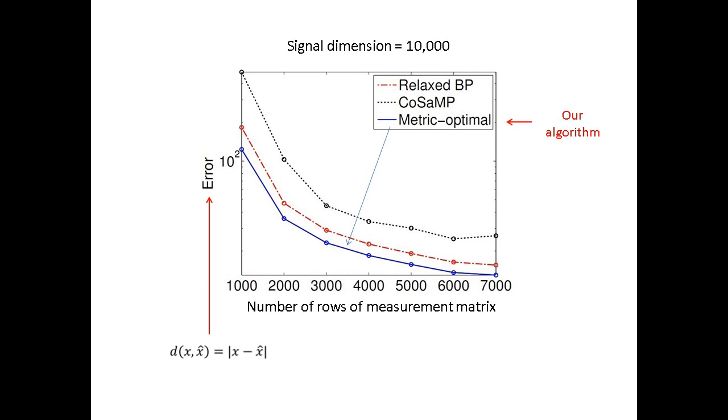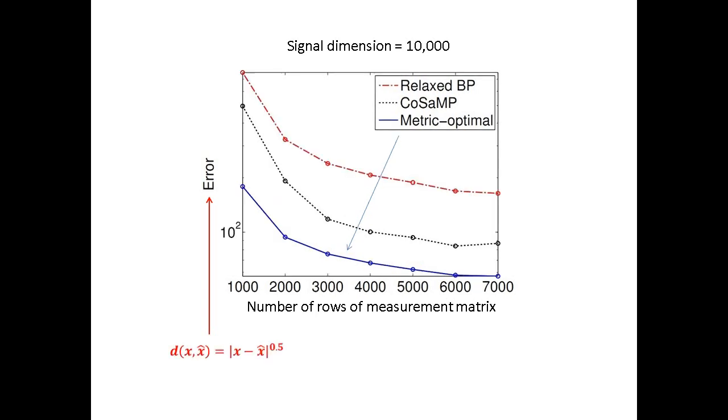Note not only that, but the error achieved by our algorithm is 20% lower than the errors achieved by two other algorithms. Similarly, in the second plot, we define the error metric to be the square root of the absolute error. Again, our algorithm achieves significantly lower errors than those achieved by the other two algorithms.